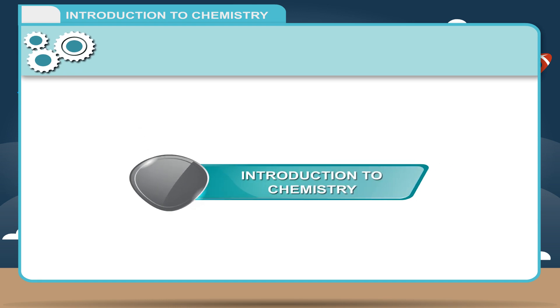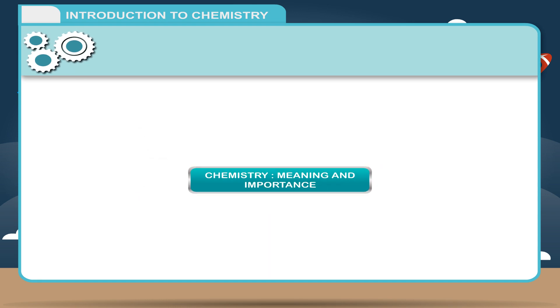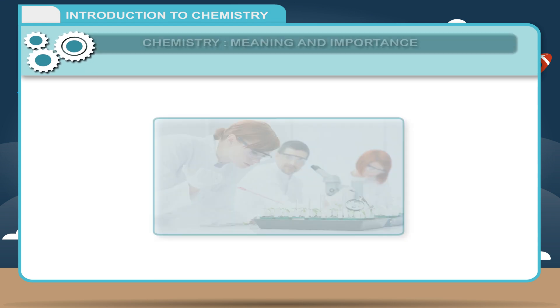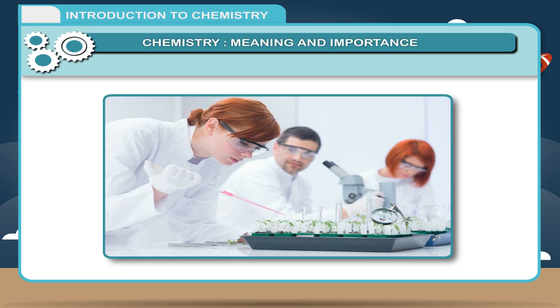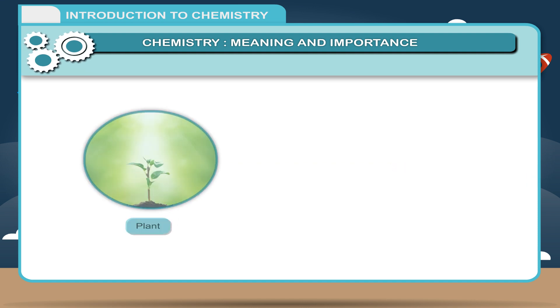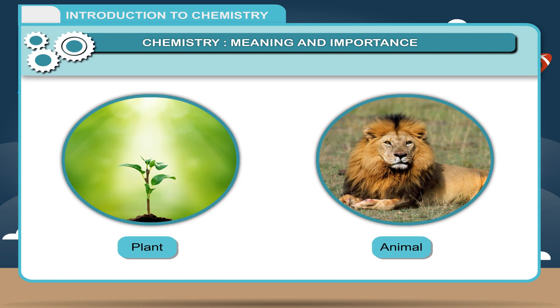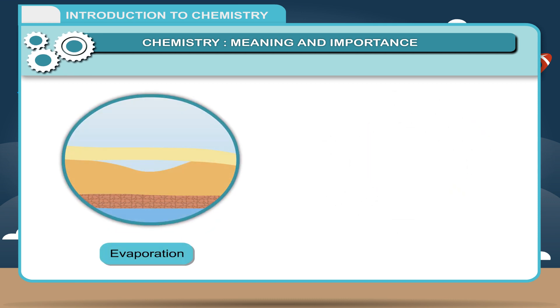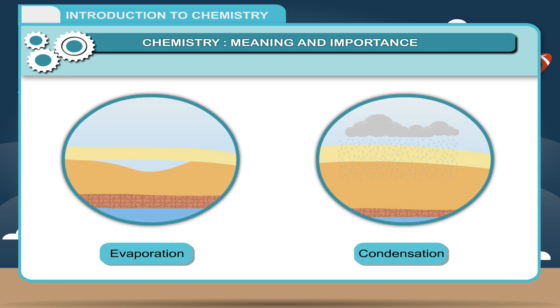Introduction to Chemistry - Chemistry meaning and importance. Science is based on facts which have been collected by careful observations and their verification through scientific methods. Till now you have studied about your surroundings, plants and animals, physical phenomena like evaporation, condensation, as a part of science.